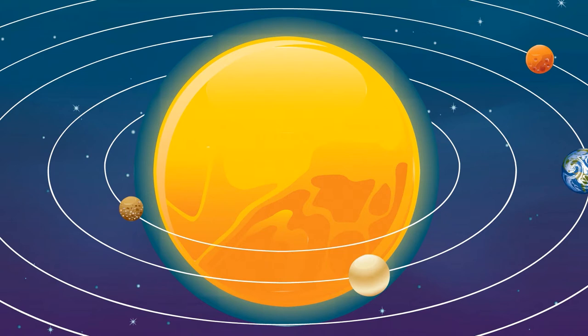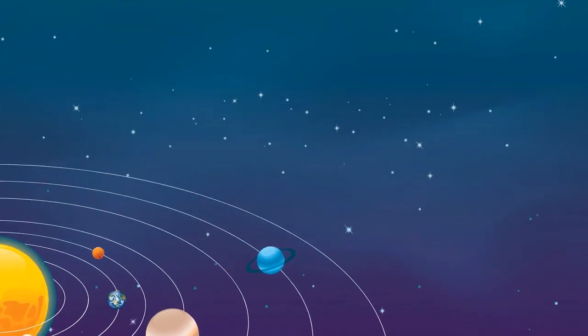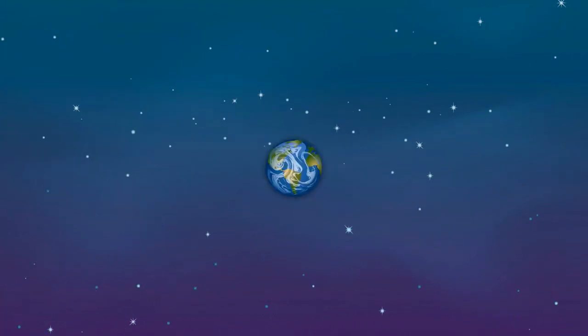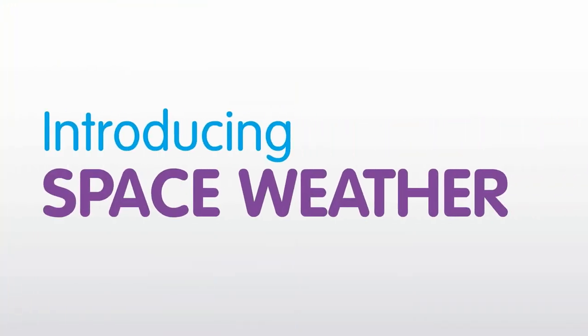Because our planet is not alone in space, things that happen in our solar system, and even further away, can affect our lives here on Earth. One of these things is a phenomenon called space weather.